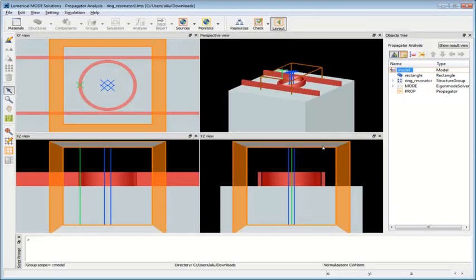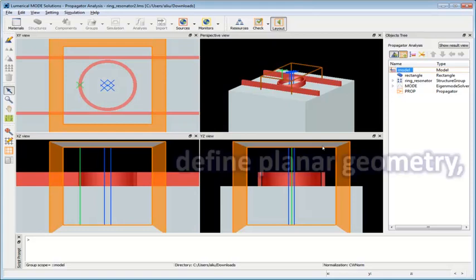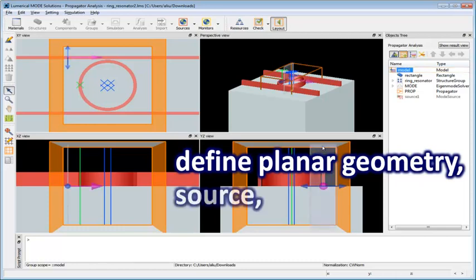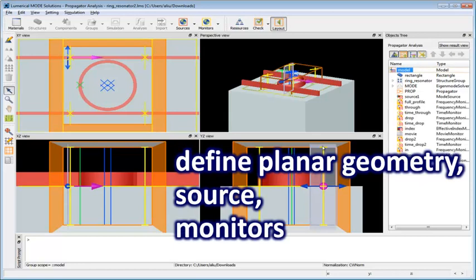The user can create the 3D planar waveguide geometry in a full 3D CAD environment. In this example, we have a planar SOI ring resonator, where the fundamental waveguide mode is used as a source, and we've set up four monitors at each output port to measure the transmission results.